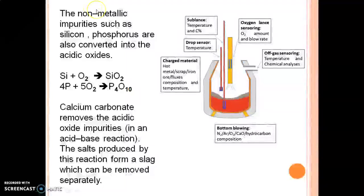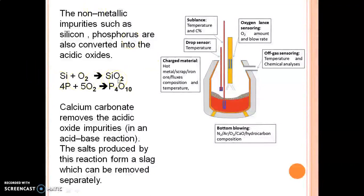Silicon and phosphorus also get oxidized into silicon oxide and phosphorus oxide — you can see the equations here. Powdered calcium oxide, being a basic compound, reacts with these acidic impurities — silicon oxide and phosphorus oxide. An acid-base reaction takes place and a slag is formed, which is later removed.